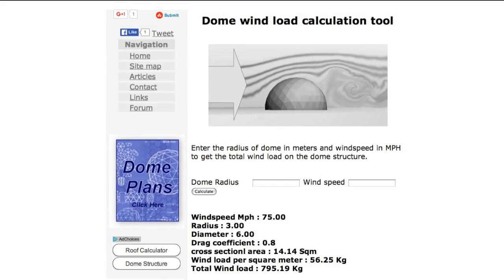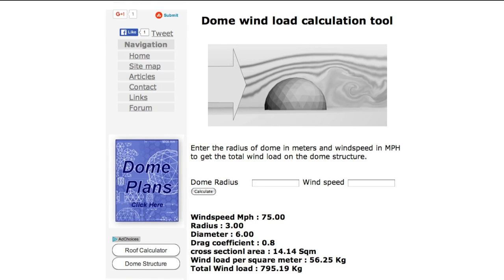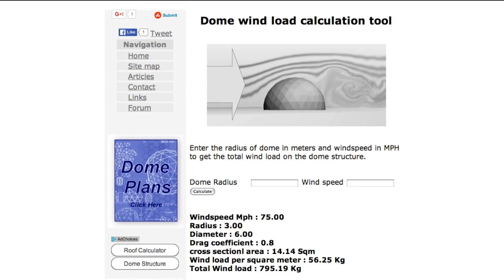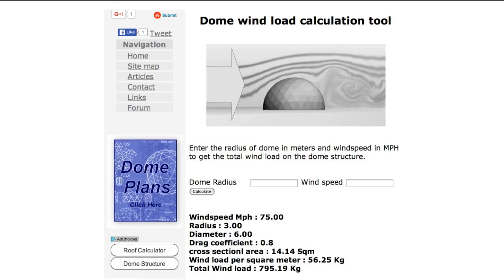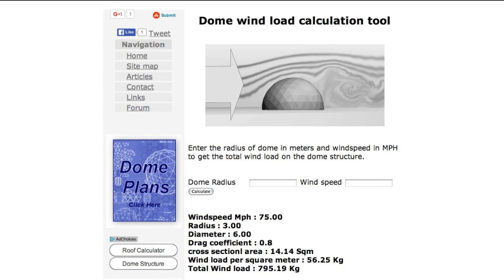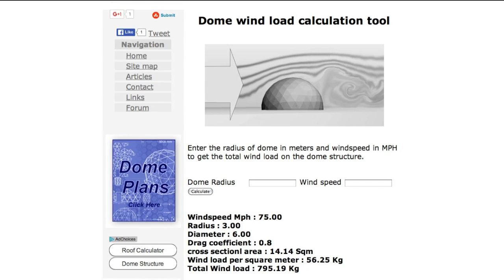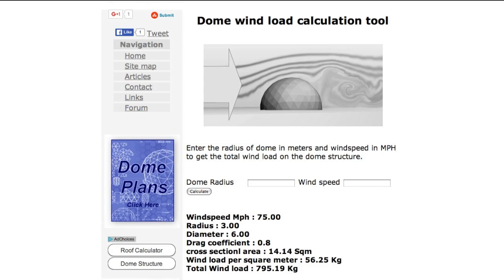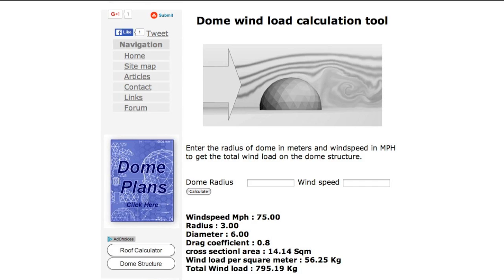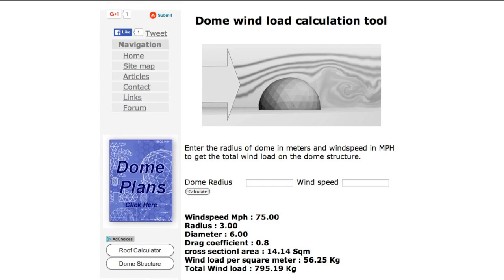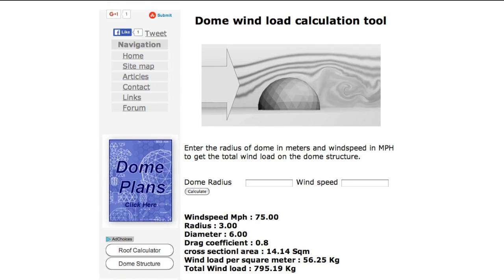And on the wind load page, we've put in a wind speed of 75 miles an hour. You just need to use the boxes and then click calculate. Here again it's a six-meter diameter dome, and we're getting a total wind load of not far off 800 kilograms. So we've got, with a 50 centimeter snow load, we have a ton, and with a 75 mile an hour wind load, we're just under a ton.